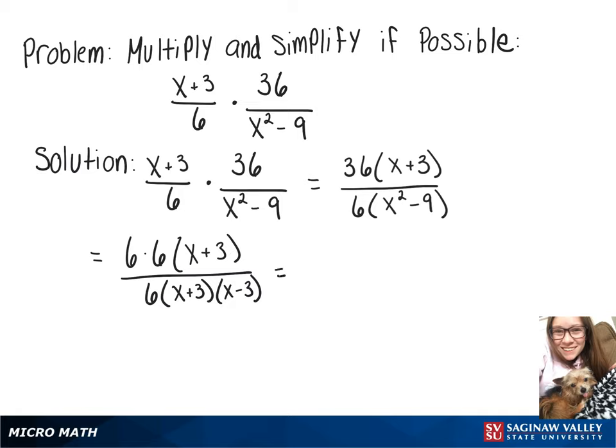And now we can split some of that up. So we have 6 over 6 times x plus 3 over x plus 3, times what we have left, 6 over x minus 3.